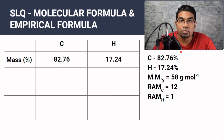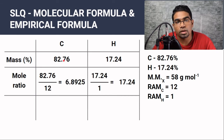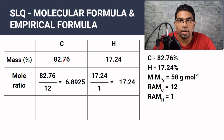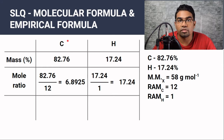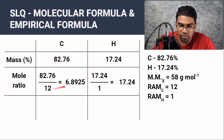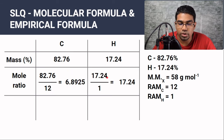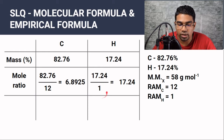Now we can find the moles using: moles = mass ÷ molar mass. For carbon: 82.76 ÷ 12 = 6.8925 moles. For hydrogen: 17.24 ÷ 1 = 17.24 moles.